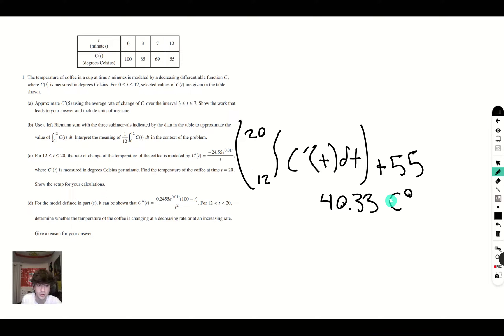Now, D says for the model defined in part C, it can be shown that C double prime is equal to the equation given by them. So for the interval 12 to 20, determine whether the temperature of the coffee is changing at a decreasing rate or at an increasing rate.